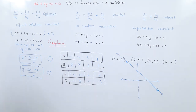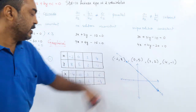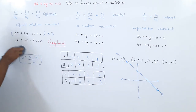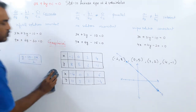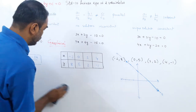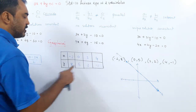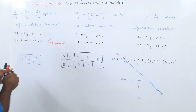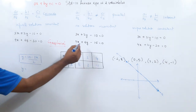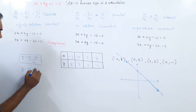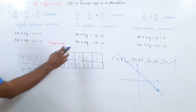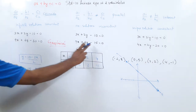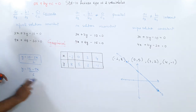We are done with condition 1 — when the points coincide. Now we move to condition 2. The first equation stays the same. For the second equation, y = (15 − 9x)/6. The first equation remains 3x + 2y − 10 = 0 as before, but the second equation changes: the constant becomes 15 instead of 30, so y = (15 − 9x)/6.